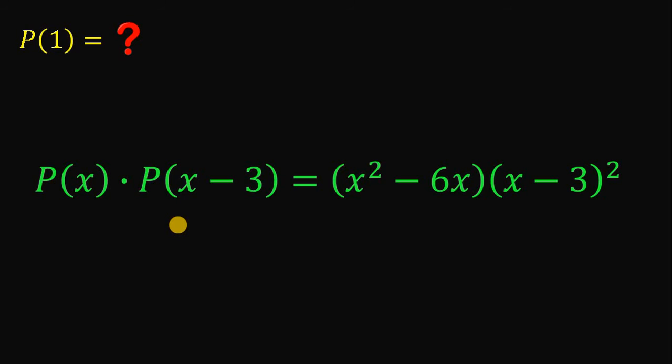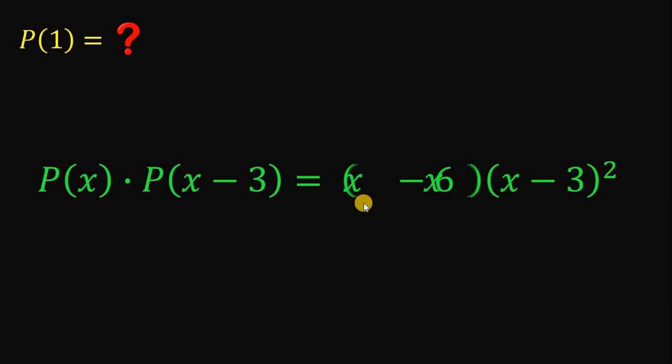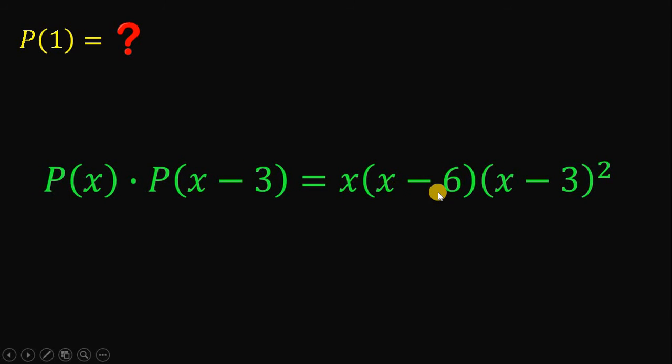Here's one of the possible solutions to this question. Now let's focus on the right hand side of this equation. We have here x squared minus 6x. We have a common factor of x, so let's factor out x. So x multiply by x minus 6.